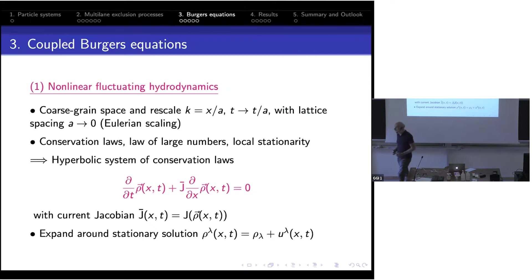On the macroscopic scale, doing the same Eulerian scaling as for ASEP but now with multiple conservation laws, what comes out is a system of conservation laws. With the density as a vector and the current Jacobian computed from the stationary currents, you get a generalized hyperbolic conservation law — a system you can try to solve numerically.